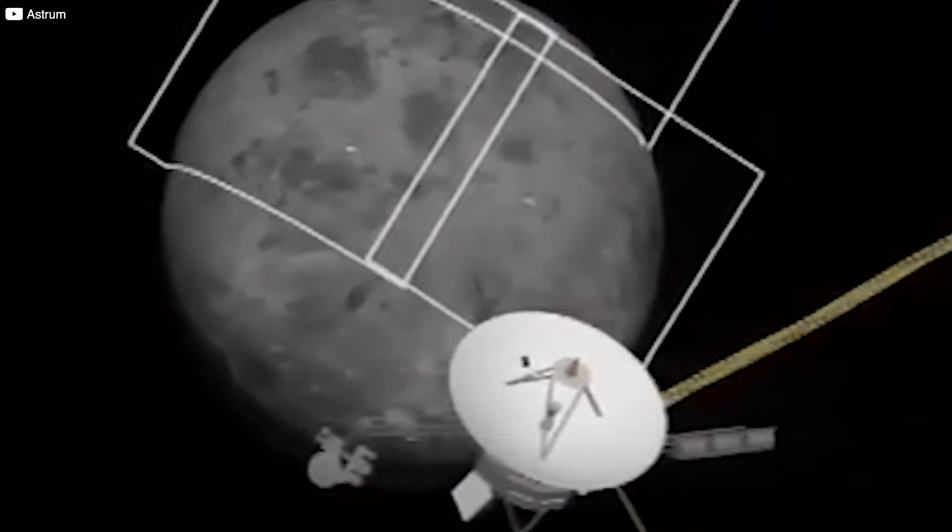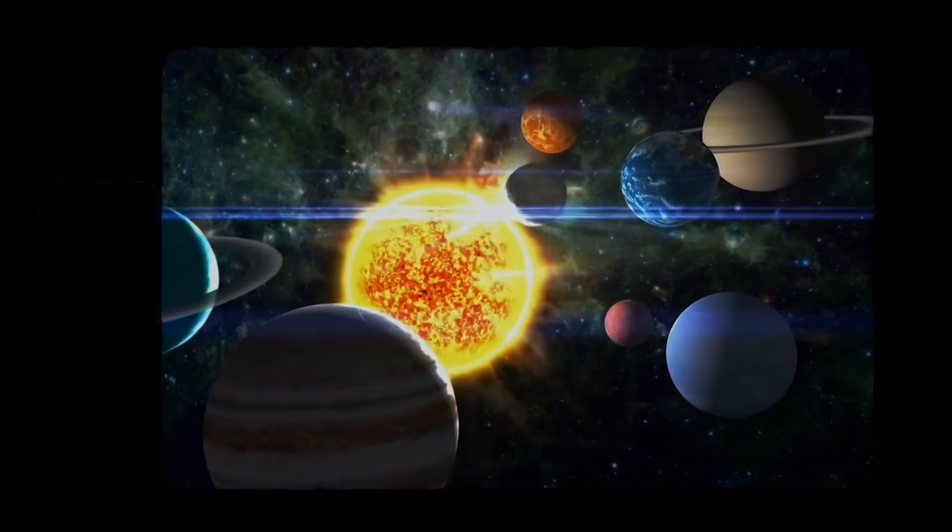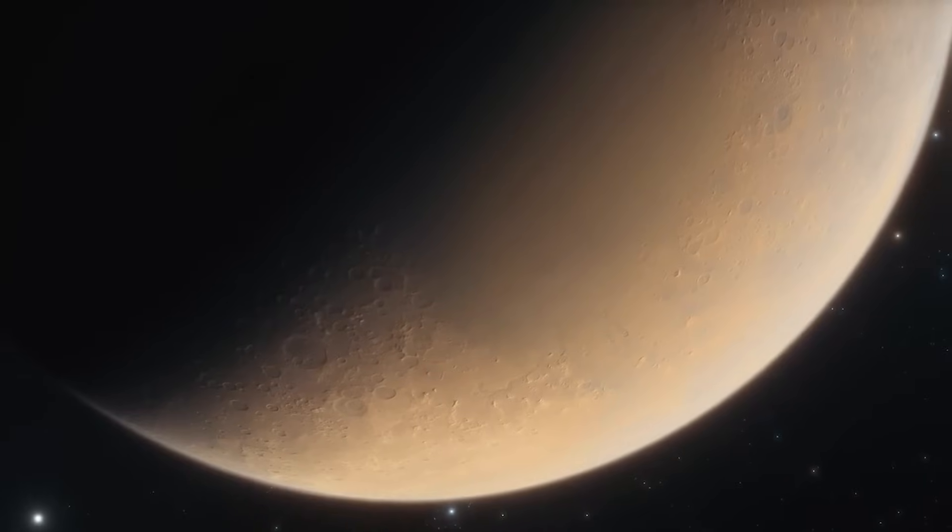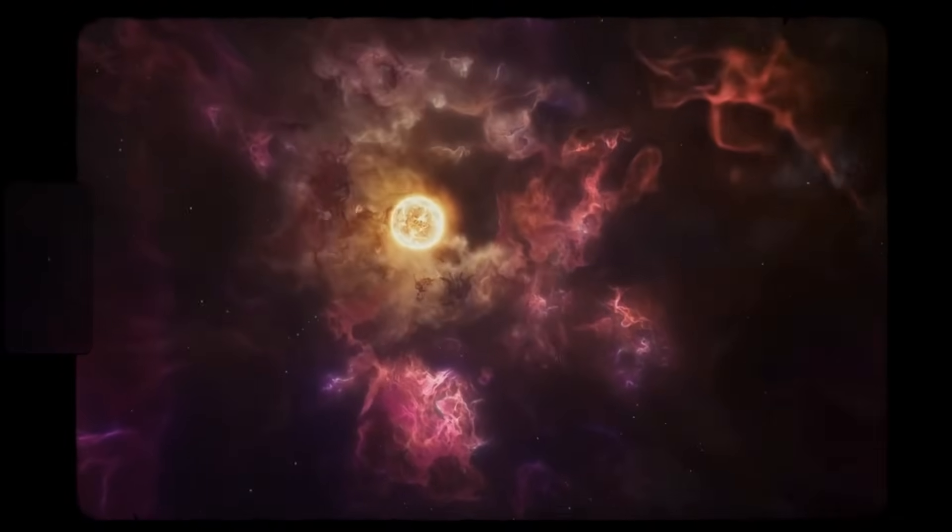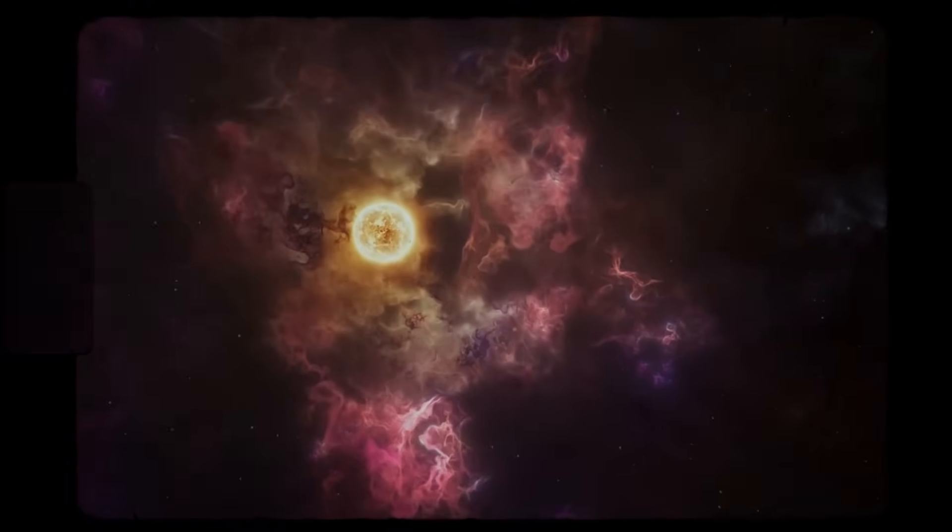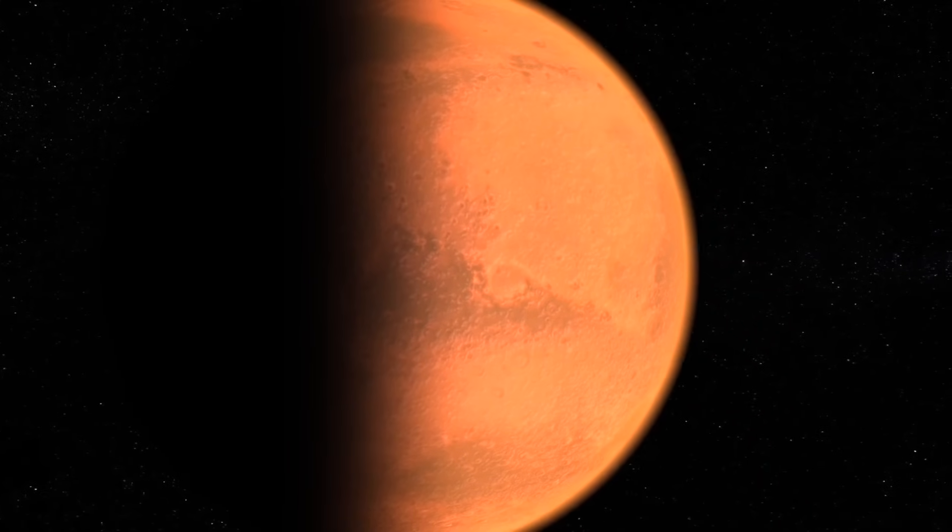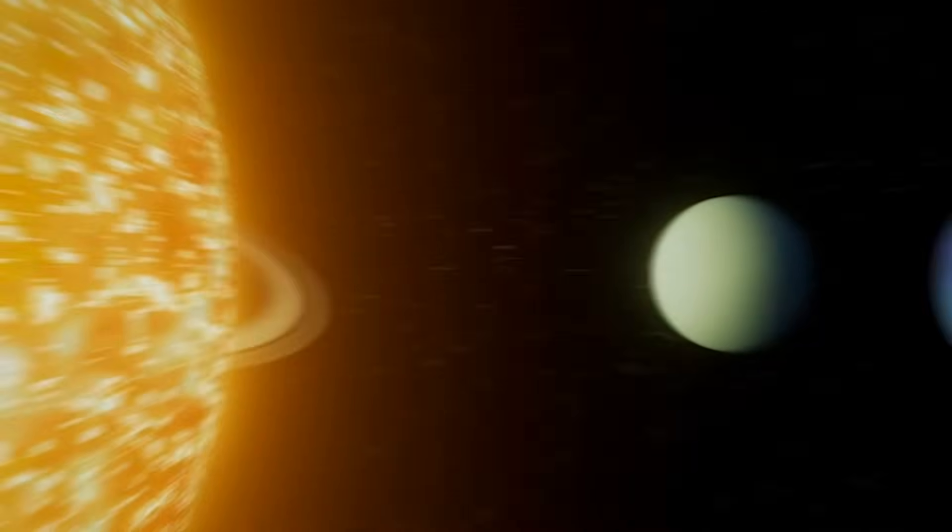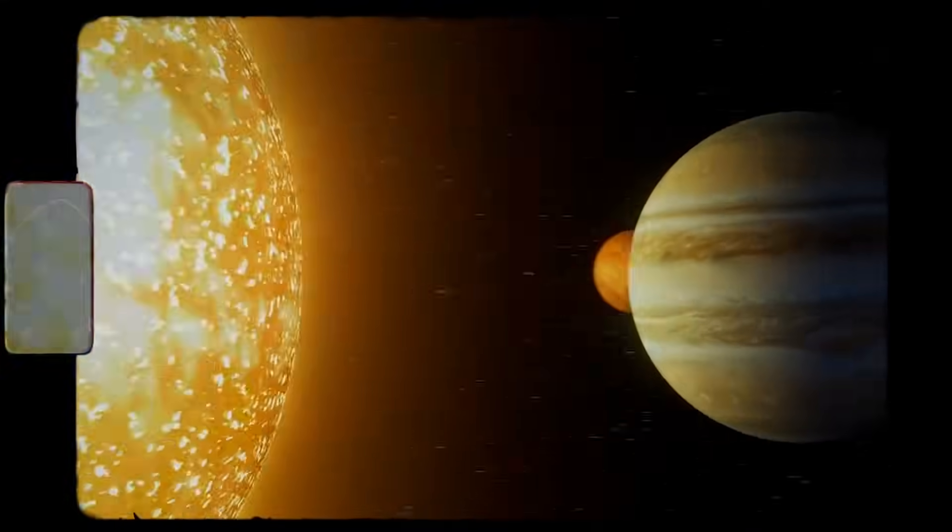So, what does this mean for our cosmic neighborhood? Our solar system is currently traveling through the local interstellar cloud, LIC, a diffuse region of gas and dust about 30 light years across. Understanding the properties of the plasma just outside our heliosphere, its density, temperature, turbulence, and magnetic field, is crucial for understanding how our solar system interacts with this cloud. Is the LIC uniform? How does its structure affect the heliosphere's shape and strength?